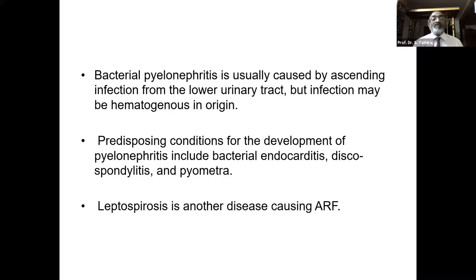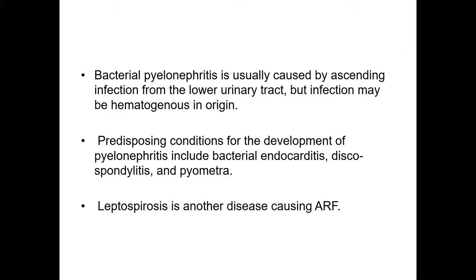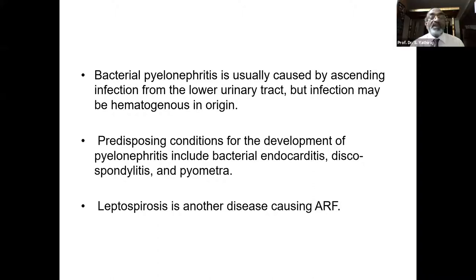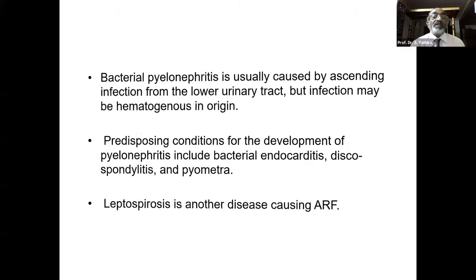Bacterial pyelonephritis is usually caused by ascending infection from the lower urinary tract, but infection may also be hematogenous in origin. Predisposing conditions include bacterial endocarditis, discospondylitis, and pyometra. Leptospirosis is another disease causing acute renal failure.